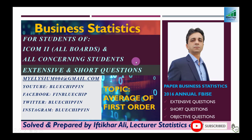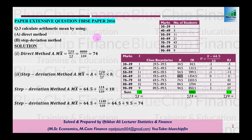Welcome once again to my channel Blue Chip Finance. Is video mein hum 2016 ka first order paper discuss karenge jo business statistics ka hai. Pehla extensive question hai: calculate arithmetic mean by using (1) direct method and (2) step deviation method. Marks ki range 30 to 39, 40 to 49 aur isi tarah classes given hain aur number of students ya frequency bhi saath given hai.